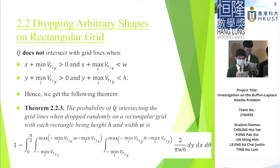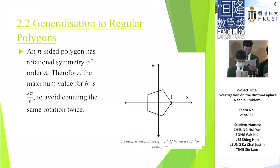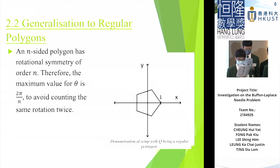So, Q does not intersect with the grid lines under these conditions. And hence, we can find the ranges of the integral. And moreover, the maximum value for theta is 2π over n. It is in order to avoid counting the same rotation twice.